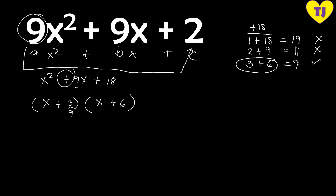We do not divide x — we only slid the numbers, not x. So we divide the constants by 9. For the first factor: 3 divided by 9 — the common factor is 3, giving us 1/3. For the second factor: 6 divided by 9, simplifying by 3 gives us 2/3.